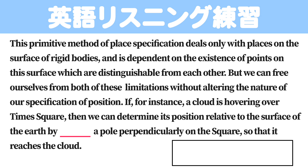But we can free ourselves from both of these limitations without altering the nature of our specification of position. If, for instance, a cloud is hovering over Times Square, then we can determine its position relative to the surface of the earth by erecting a pole perpendicularly on the square so that it reaches the cloud.